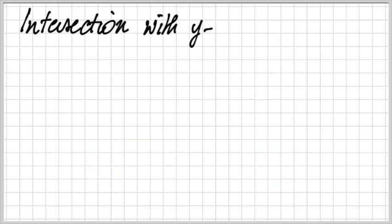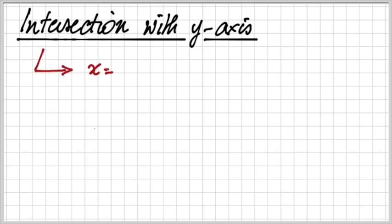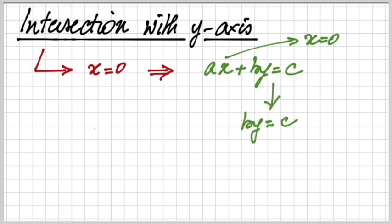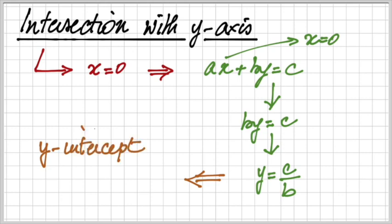We can now do the same for the intersection with the y-axis. Here we see that x is equal to 0. And when we put this in the equation of the line, we see that with x equal to 0, this equation becomes b times y is equal to c. And we can say that y is equal to c divided by b. Based on this, we can find the y-intercept or the coordinates of the y-intercept, which are given by 0 and c divided by b. So now we know how to calculate the x and the y-intercept. When we have the equation of a line, understanding the value of the x and the y-intercept will help us to draw this line, this straight line, because we only need two points to draw a line.